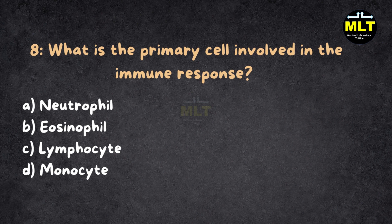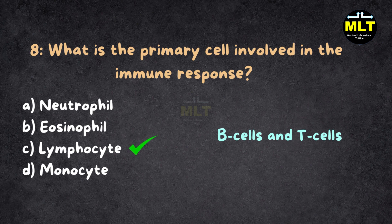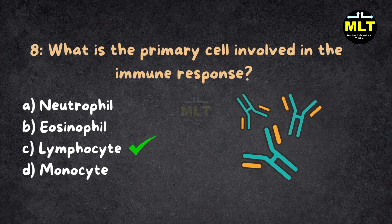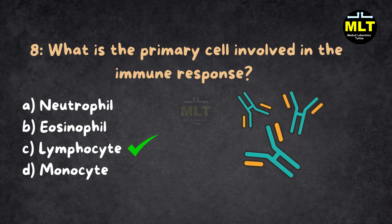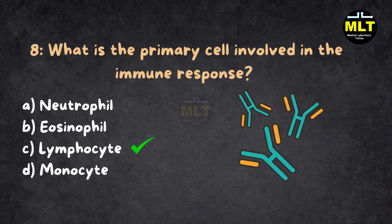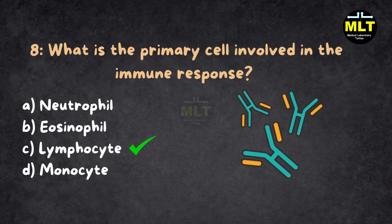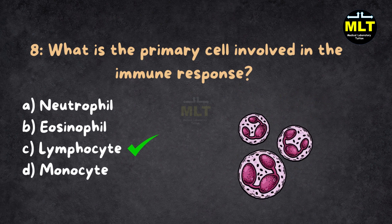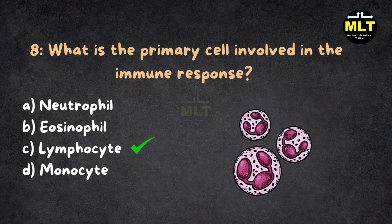Correct answer: C. Lymphocyte. Explanation: Lymphocytes, including B cells and T cells, are key players in adaptive immunity, producing antibodies and killing infected cells. Neutrophils are part of the innate immune response.